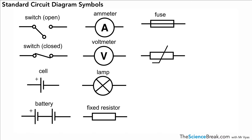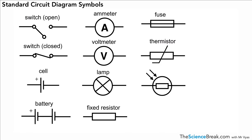What we have next is a thermistor. This is like a temperature sensor and its resistance changes depending on the temperature. In this case, if we have a high temperature we have a low resistance, so it acts like a temperature sensor and also like a switch in a circuit. We'll look at those more in the future.